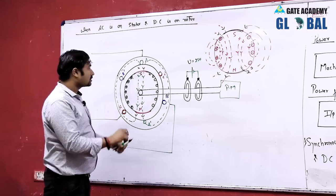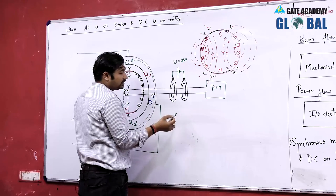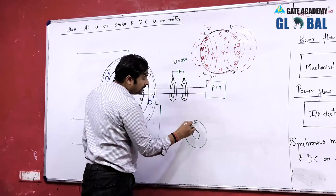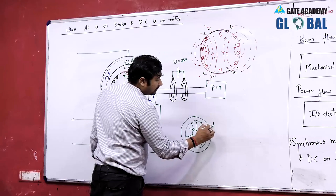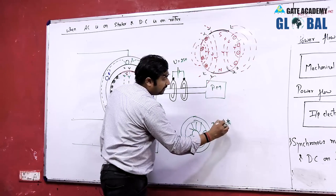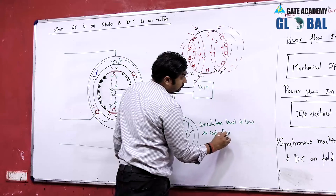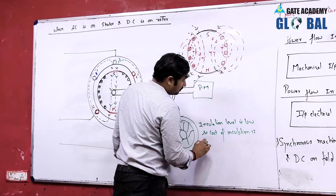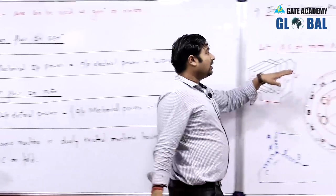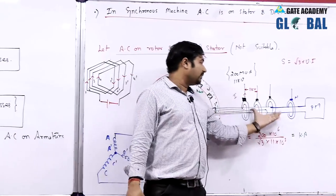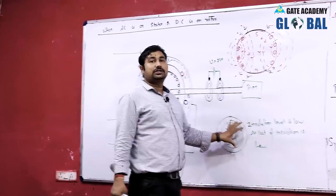The voltage needed on the slip ring is only about 250 volts, so the slip ring size and insulation cost needed will be lower. In the previous case — DC on stator, AC on rotor — we needed 4 slip rings; in this case, we only need 2 slip rings and the insulation cost is also lower. Overall cost of insulation decreases, centrifugal force is lower, and the most important advantage is effective cooling.